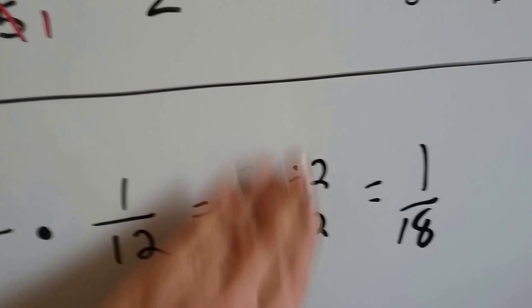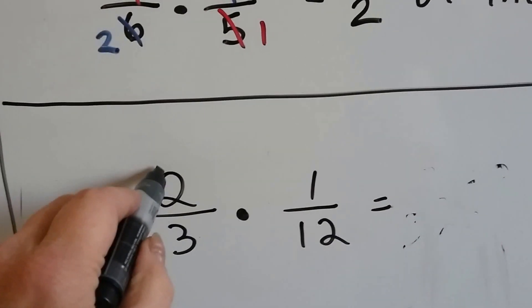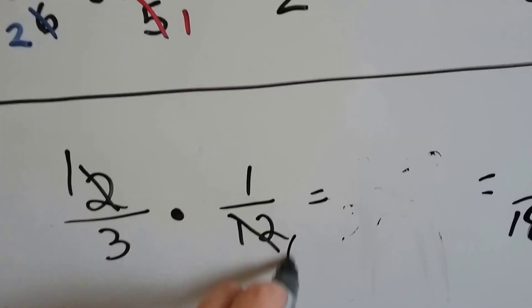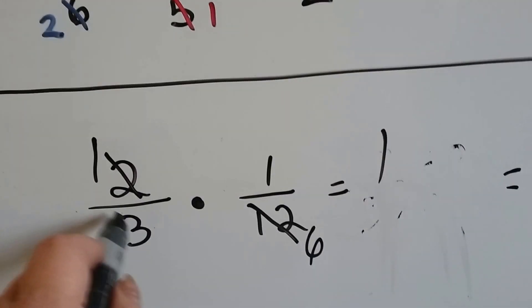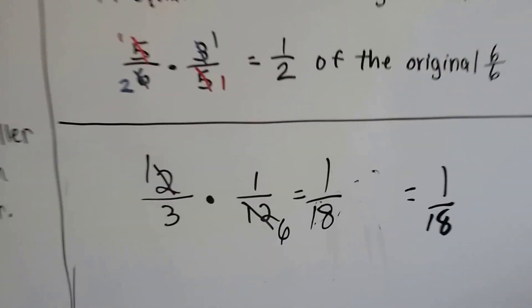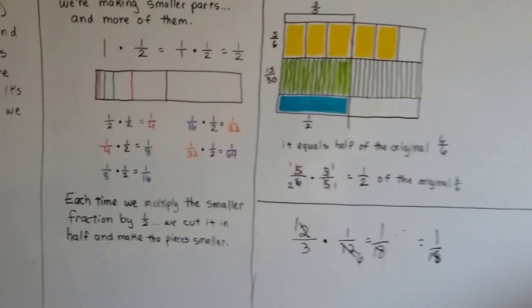Well, we also could have just cross multiplied. We could have said, okay, we have a 2 and a 12. There's one 2 here and six 2s here. Now what we have to do is 1 times 1 is 1 and 3 times 6 is 18, and we wouldn't have had to simplify. It would have been 1/18 as we did the equation. Isn't that something else? Fractions are so amazing.